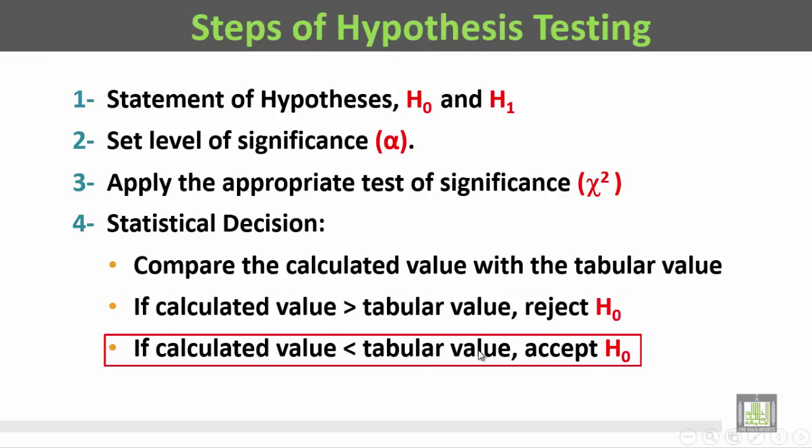خطوات اختبار الفروض هي كما يلي: الخطوة الأولى وضع الفروض (فرض العدم والفرض البديل)، الخطوة الثانية هي وضع مستوى المعنوية أو الألفا (α)، الخطوة الثالثة تطبيق اختبار المعنوية المناسب، في هذه الحالة سيكون كاي تربيع (χ²).